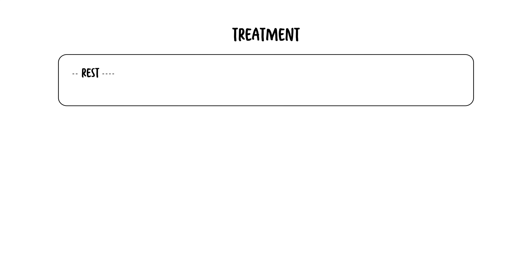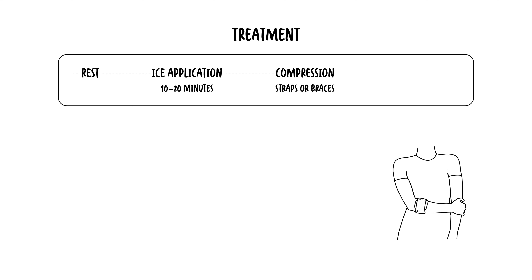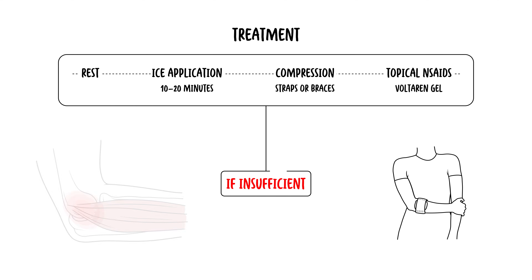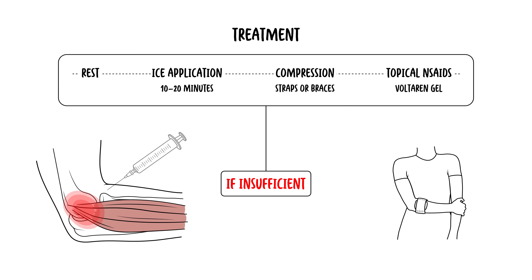Treatment of medial elbow tendinopathy generally begins with non-operative methods, including rest, application of ice — 10 to 20 minutes every few hours during acute stages — compression, and the use of topical non-steroidal anti-inflammatory drugs such as Voltaren gel, or oral anti-inflammatory drugs. If these conservative approaches fail, treatment may include a corticosteroid injection, though it's crucial to limit the number of injections given, as there could be associated tendon damage and complications to the ulnar nerve, which runs close to this area.